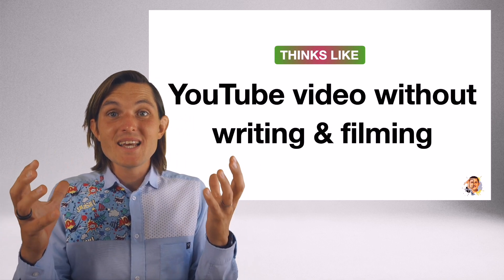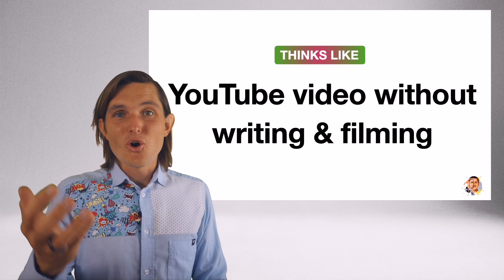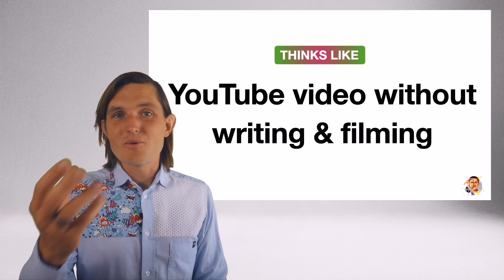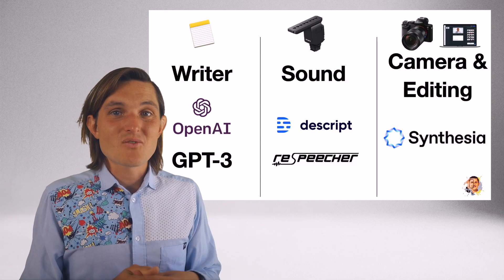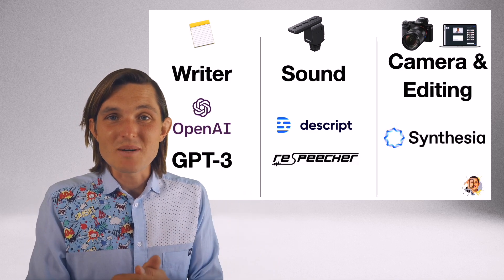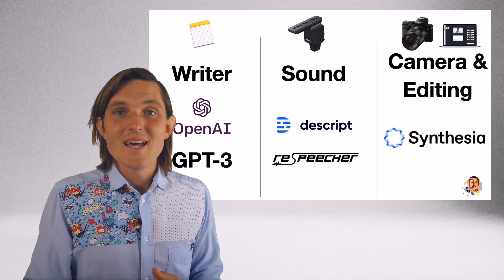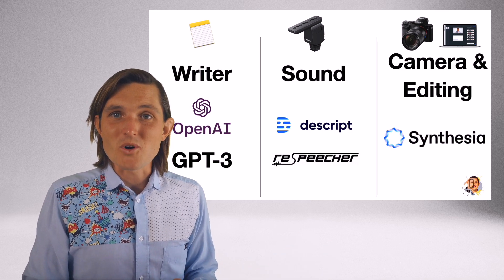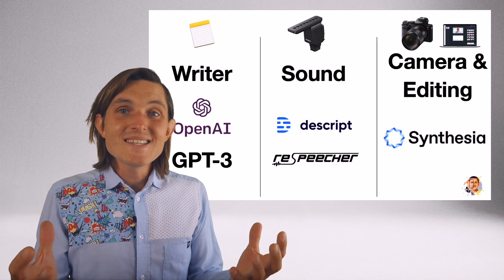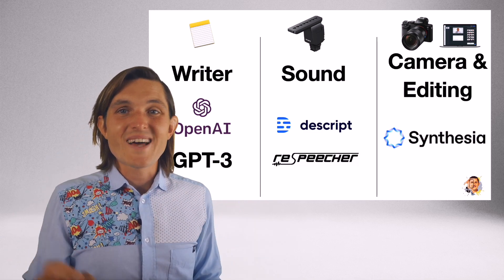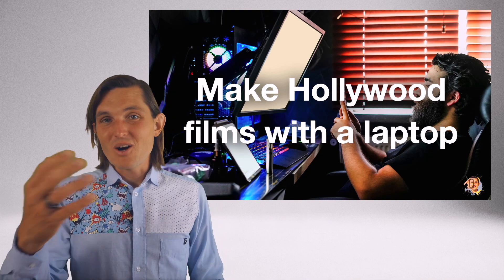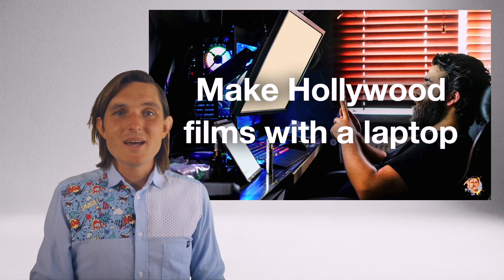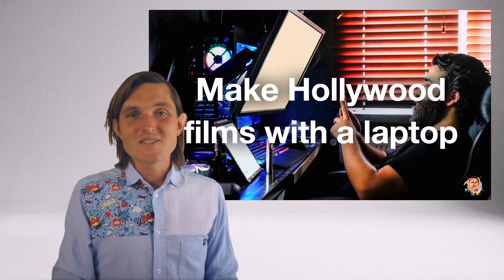And things have truly changed. Imagine even in my case creating a YouTube video without writing or filming — you could just ask me, hey can you tell me more about synthetic media, and it automatically generates a video. Even today I can use a writer like OpenAI GPT-3 to write the script, Descript to make it sound like me — or a tool like the one used in the recent Mandalorian series from Star Wars — and for camera and editing use Synthesia, a platform that brings it all together with effects, text, and quality output. So just maybe we are very soon — of course it'll take time to get to making Hollywood films on a laptop, which is Synthesia's vision.